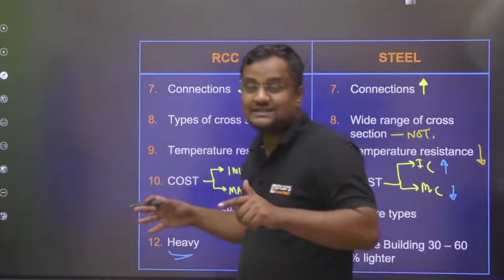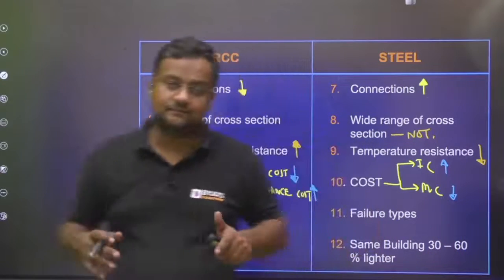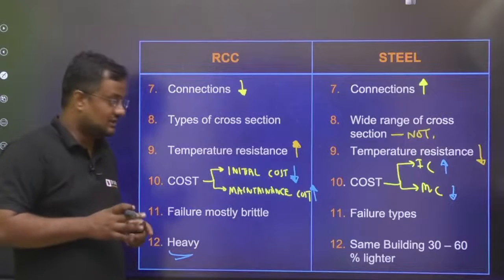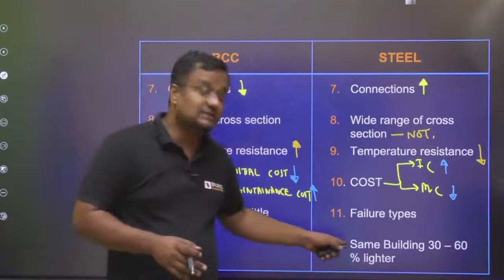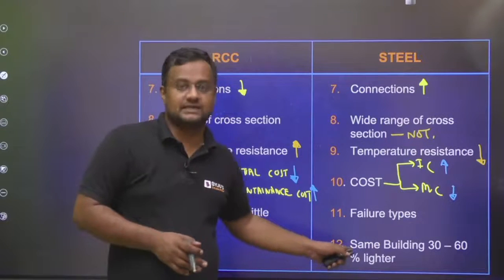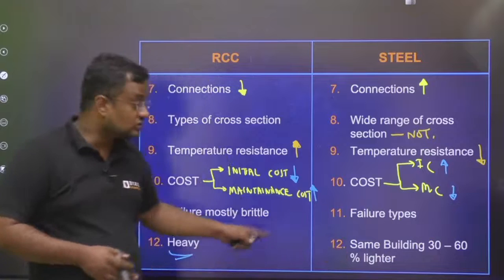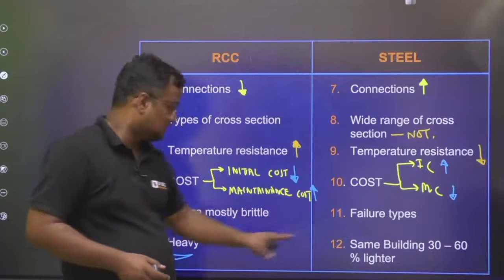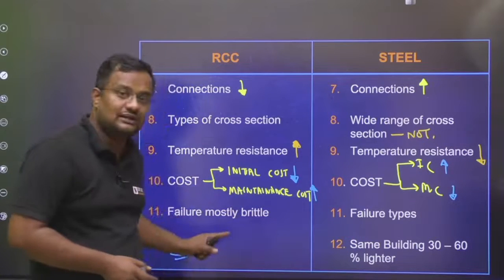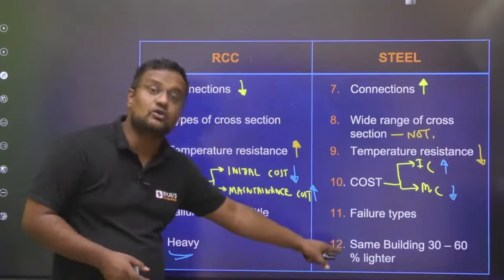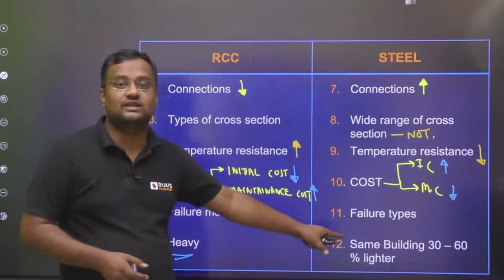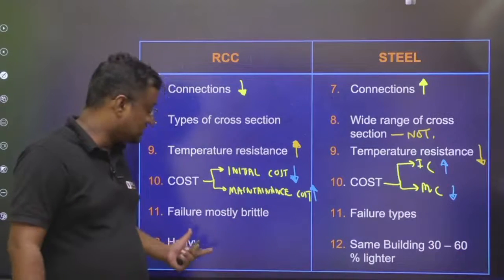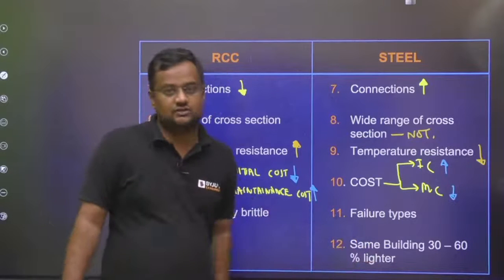Steel structures are lighter. For the same load, if you want to make a steel structure instead of RCC in the same building, it will be comparatively 30 to 60 percent lighter. The major reason is not the density of steel but that a lesser cross-sectional area is required for the same load in steel, whereas a larger cross-section is required in RCC.